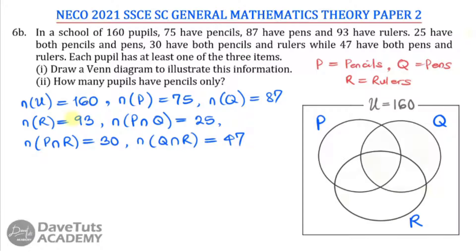These are the pieces of information we are given to put in the Venn diagram. The fact that each pupil has at least one of the three items means all pupils will be included either within P, Q, or R, or the intersections of them. None will be outside that combination of P, Q, and R. As a rule of thumb, I generally prefer that we start at the intersection of the three subsets.